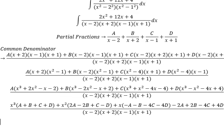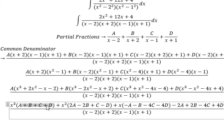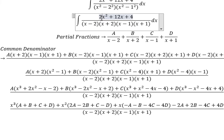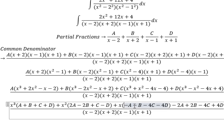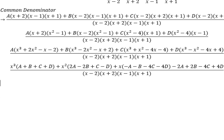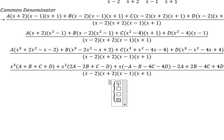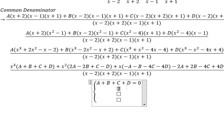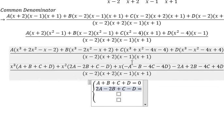Now we compare coefficients. We don't have s cubed, so A plus B plus C plus D equals 0. For s squared, we have 2A minus 2B plus C minus D equals 2. For s, the coefficient should equal 12. For the constant, it should equal positive 4. We now set up and solve the system of equations.